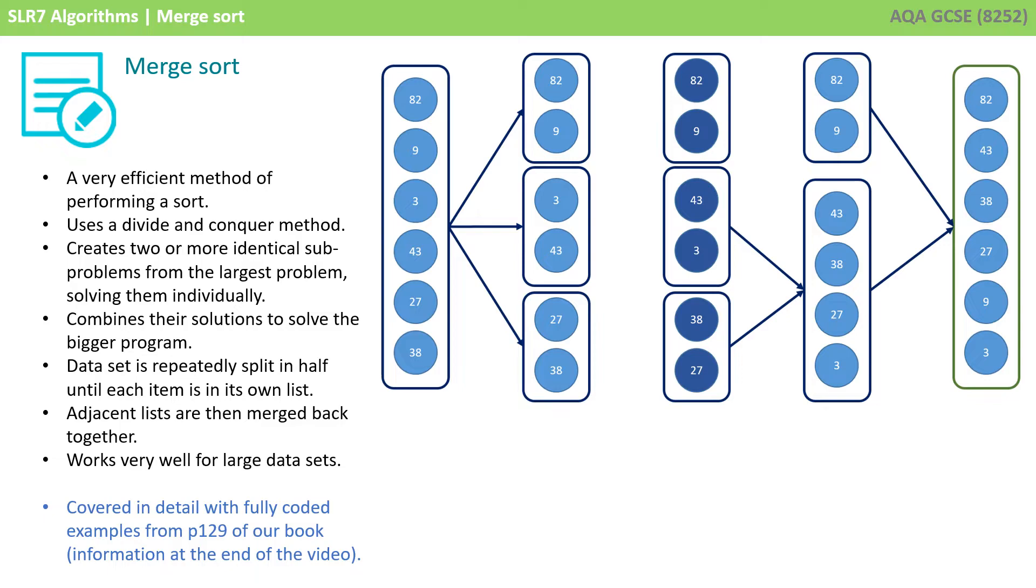It creates two or more identical subprograms from the largest problem, solving them individually. It combines their solutions to solve the bigger problem. The dataset is repeatedly split in half until each item is in its own list. Adjacent items are then merged back together, so this algorithm works very well for large datasets.